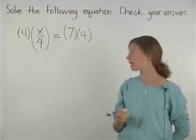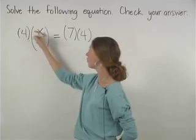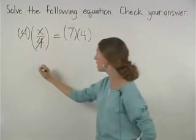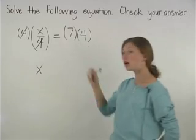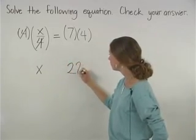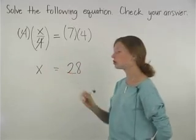Notice that on the left side, the 4 and 4 cancel each other out. So we're just left with x. On the right side, we have 7 times 4, which is 28. So x equals 28.